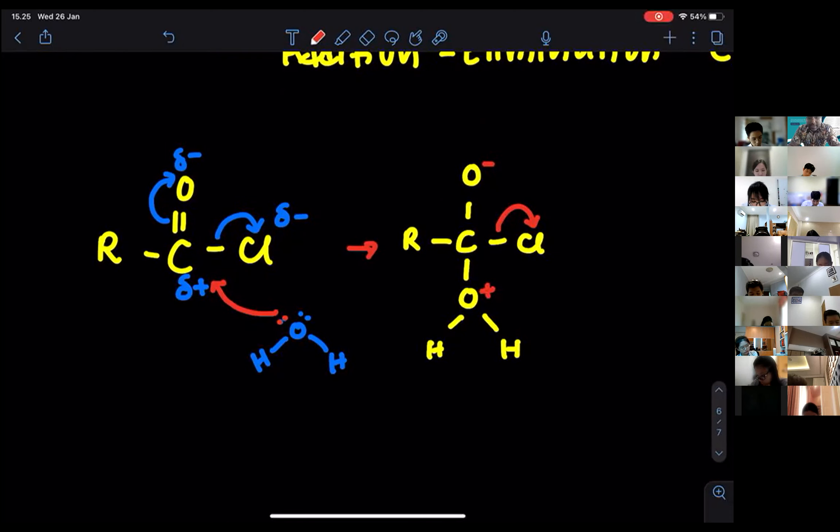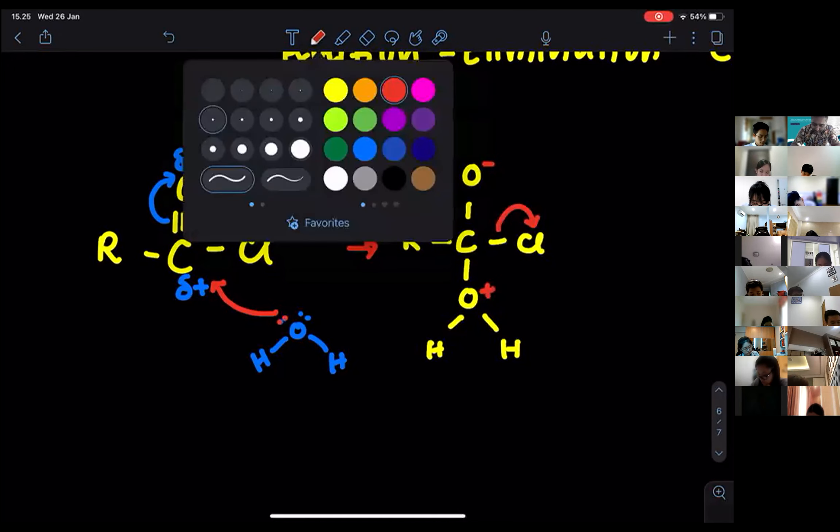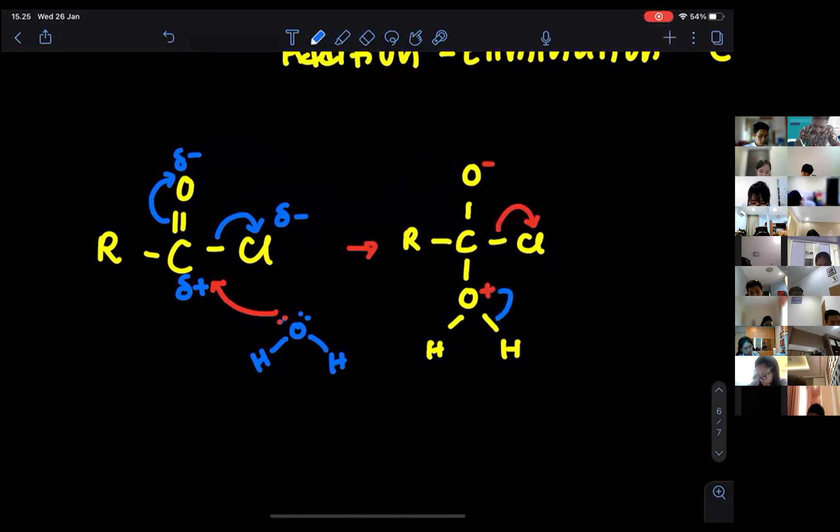So they need to take the electron from somewhere. So one of the pair of electron will try to come over here. So I repeat again, I'll use different pen. This one will go over here. When that goes in, what happens? Now, all these are addition reaction.